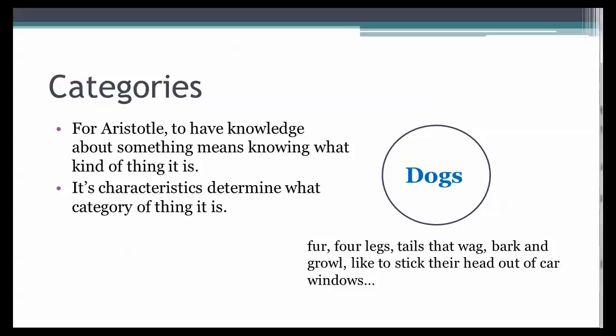We have knowledge about something when we know which characteristics that sort of thing definitely has and doesn't have. Dogs have fur, four legs, and give live birth. They don't have scales. They don't fly. We should study things to discover what characteristics define the category or type of thing that they are, and then we can claim to really know them.